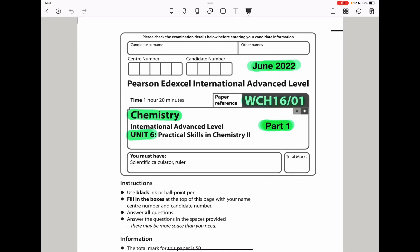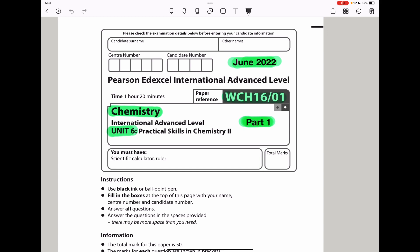Welcome to the Chemistry, Biology and Math Revision Hub. Today we are doing the Pearson Edexcel International A-Level Chemistry, Unit 6 for June 2022. This is the part 1 video. I'll do the part 2 video and put the link below the discussion box. Let's begin with the first question.